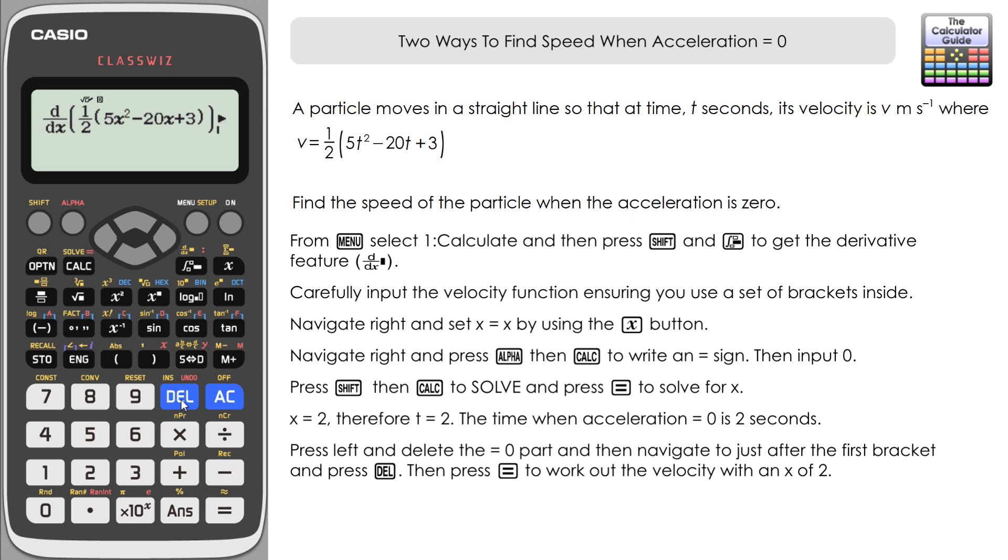And go to the beginning of the operation and navigate to just after the bracket that was opened up after d by dx, and then press delete. You can see here all we've got is the velocity function there, and the x that the calculator will use will be the x that it's just found, which was the 2 seconds that we needed. So this is exactly what we want. If you press equals and then we'll just have SD together as a decimal, then we've got a value here of minus 8.5.